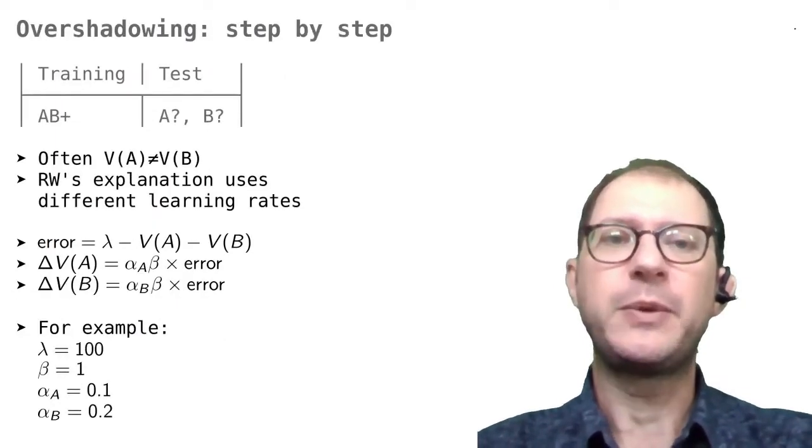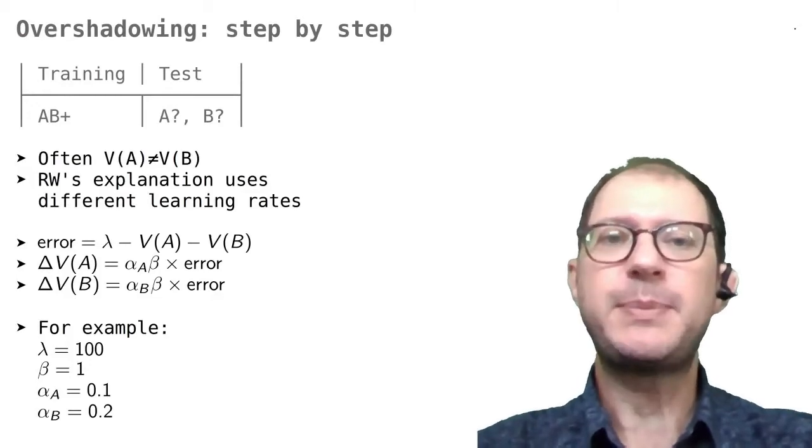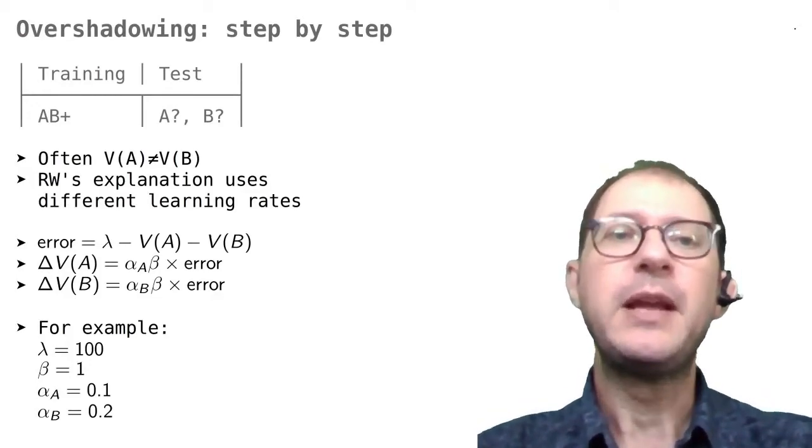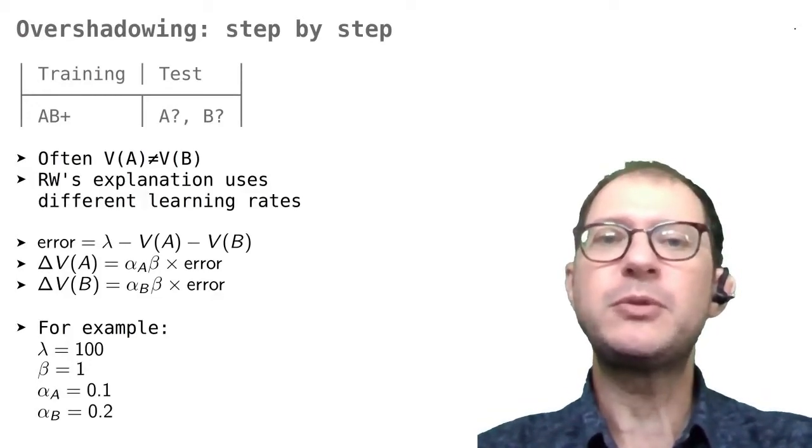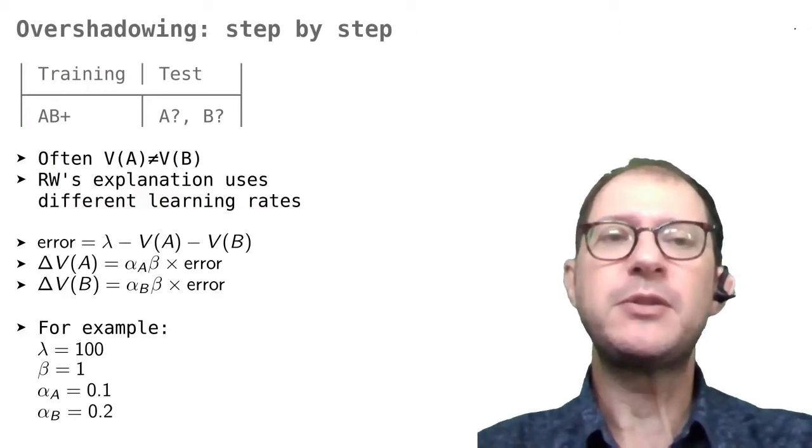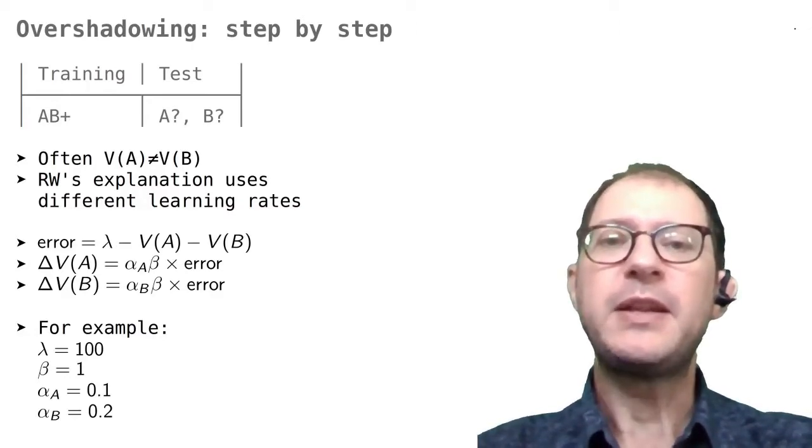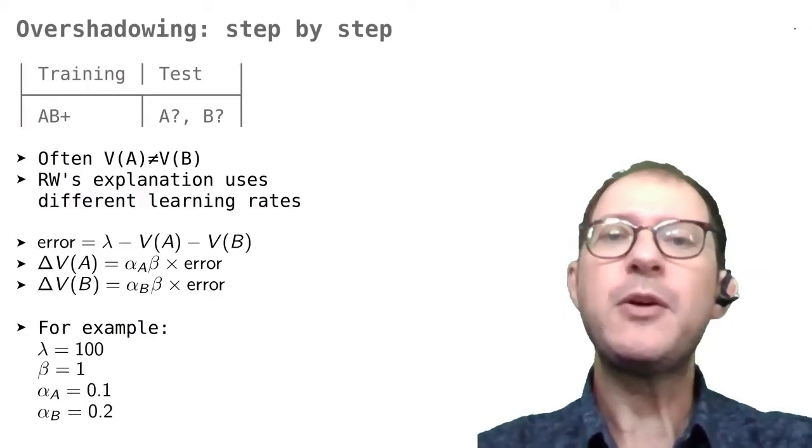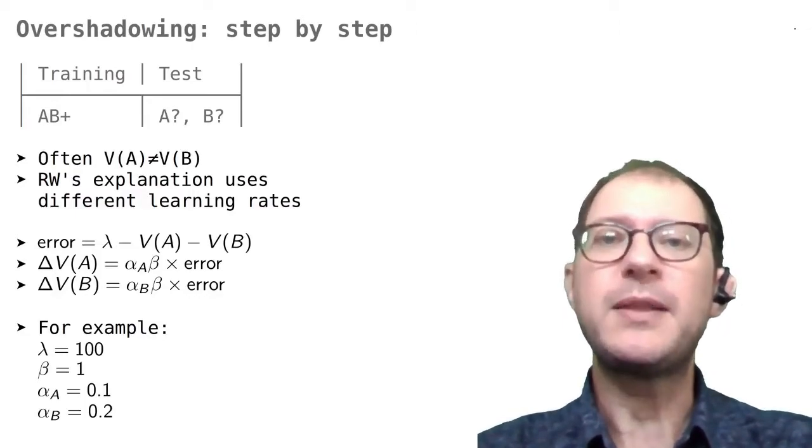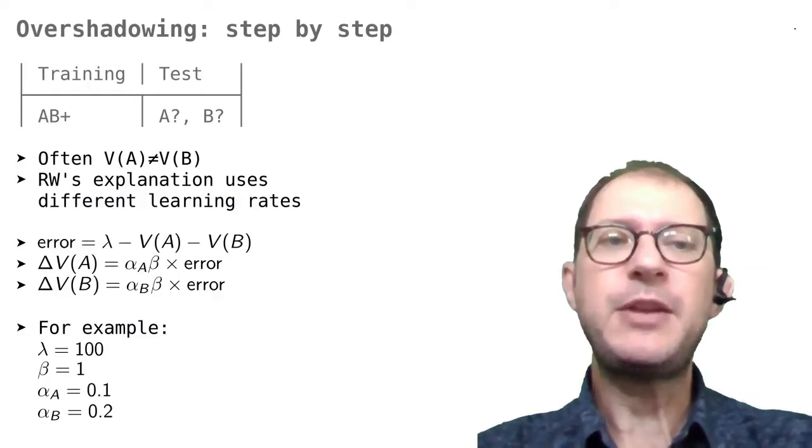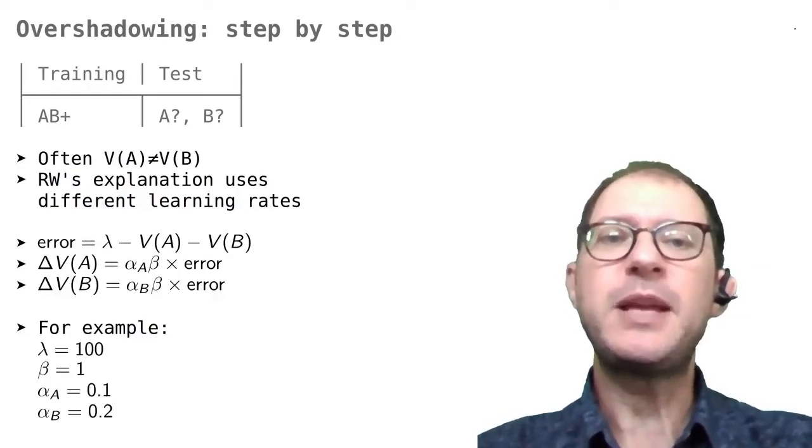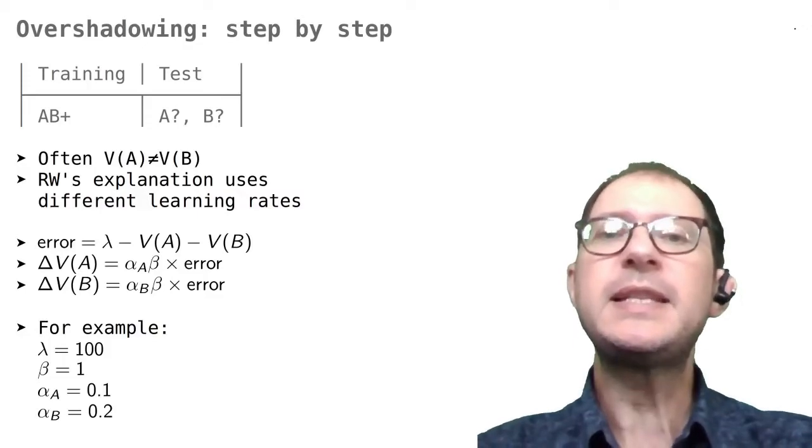Let's start from overshadowing. This is just about the simplest experiment you can have with two stimuli. The two stimuli are just always shown together. We saw in our lesson on overshadowing that even if this is true, the two stimuli are always reinforced in the same way, often animals learn more about one than the other. RW's explanation of this fact is that the two stimuli have different learning speeds. Let's see how this works.